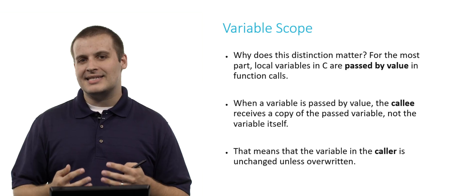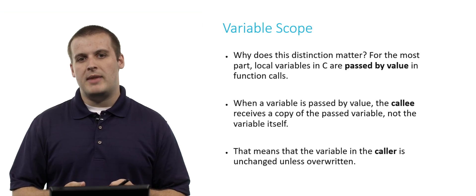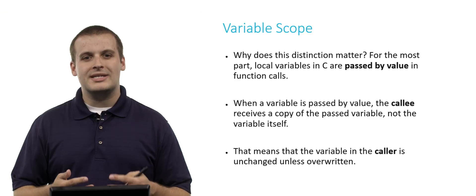Why does this distinction matter? Why do we care whether some variables are local and others are global? Well, for the most part, local variables in C are what's called passed by value when we make a function call. What does that mean?